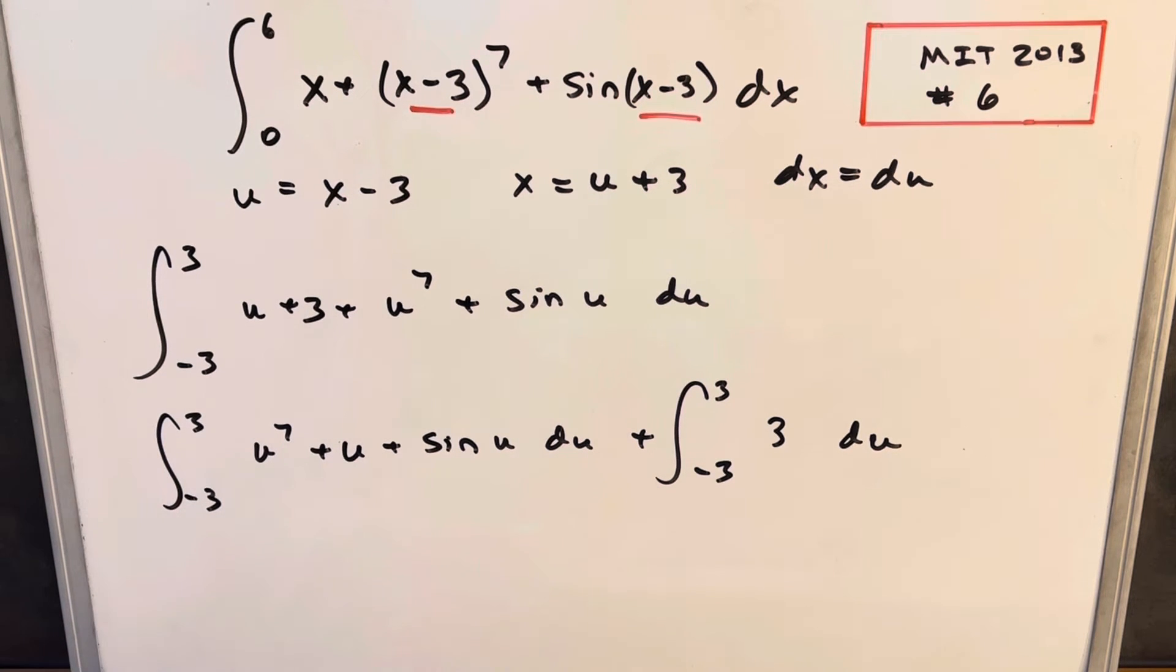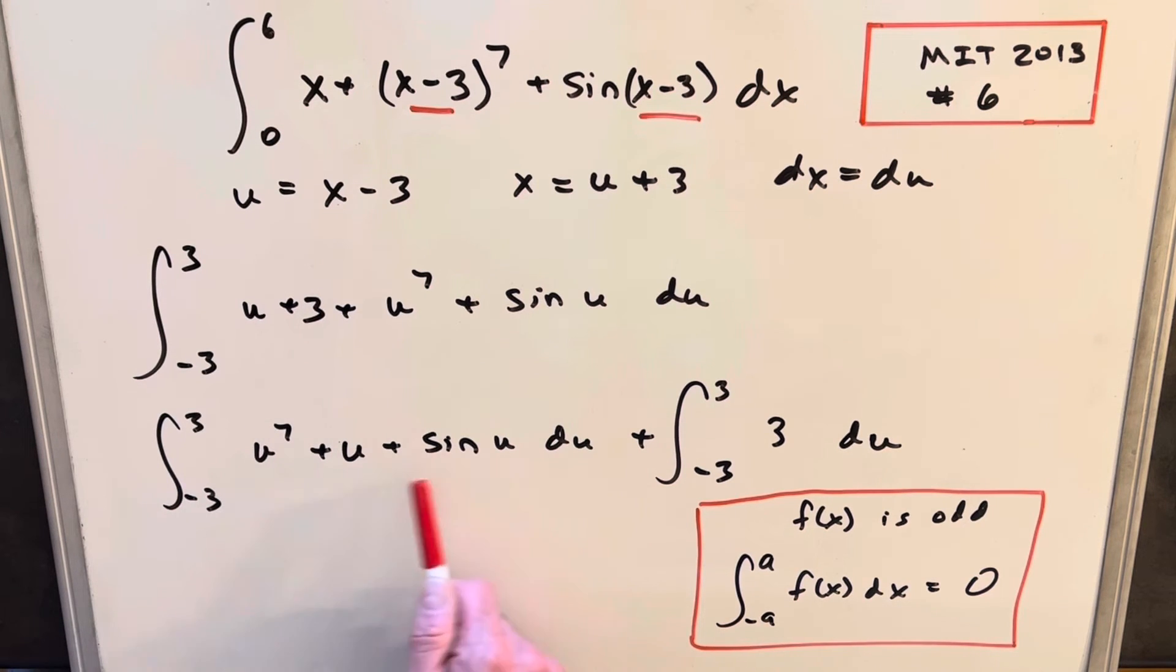Well, we have a special property that we can use. What I want to do is use this property of odd functions over here on the right. So if our bounds are symmetrical, right, we have a positive and negative of the same value, and f(x) is odd, then the integral is going to be 0. And then one thing to notice, okay, so all three of these are odd. We could split them up and do each of them separately, but the addition of odd functions is also an odd function.